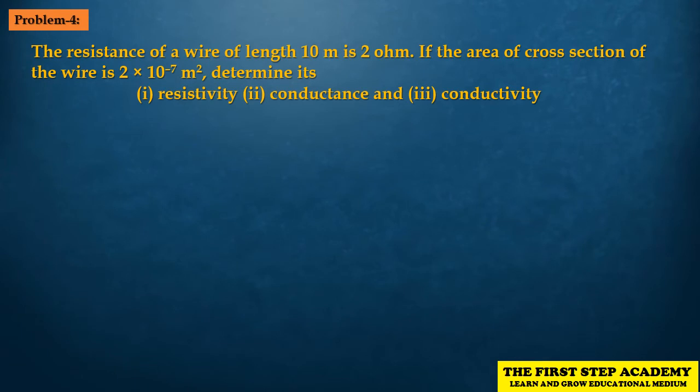Problem 4: The resistance of a wire of length 10 metres is 2 Ohm. If the area of cross-section of the wire is 2×10⁻⁷ metre square, determine its resistivity, conductance, and conductivity.